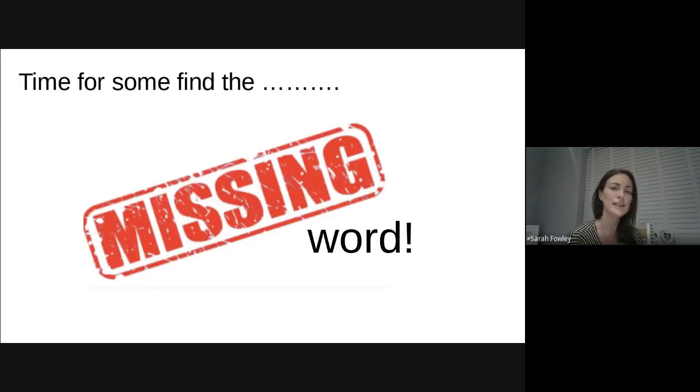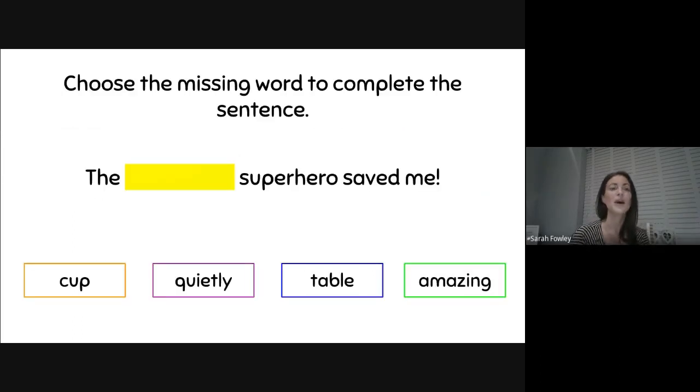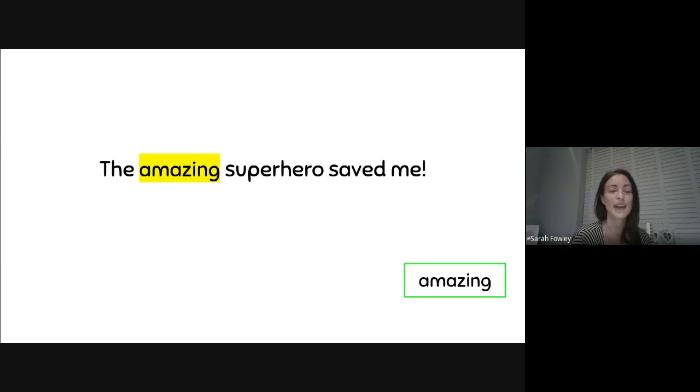Time for some find the missing word. Are you ready? Keep playing with your whiteboards and pens or your paper. So choose the missing word to complete the sentence. Now the best way to do this is to read the sentence with each of the words. So let's try the first one together. The cup superhero saved me. What? That sounds so silly. The quietly superhero saved me. No, I don't think so. The table superhero saved me. That doesn't make sense, does it? The amazing superhero saved me.